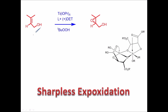Sharpless epoxidation is mostly carried out on functionalized alkenes. It requires three things: a catalyst, a chiral reagent — in this case diethyl tartrate (DET) — and a peroxy acid which leads to the epoxidation. The peroxy acid is the oxidizing agent, diethyl tartrate is the chiral reagent which leads to enhanced selectivity, and titanium is the catalyst.